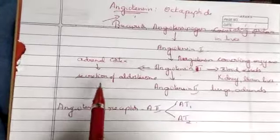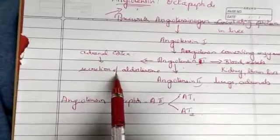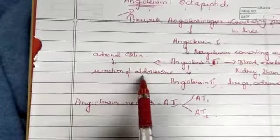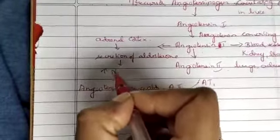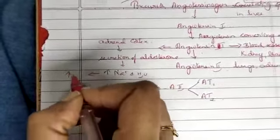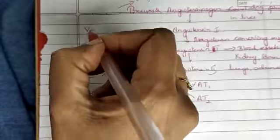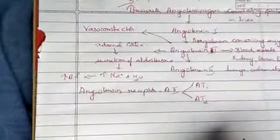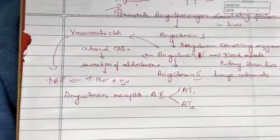Angiotensin 2 itself is a vasoconstrictor — when it constricts the blood vessels, it tends to increase blood pressure. On the other hand, it causes secretion of aldosterone from the adrenal cortex, and this secretion of aldosterone is in turn responsible for sodium and water retention, which in turn increases blood pressure. Additionally, angiotensin 2 acts as a vasoconstrictor, and this vasoconstriction is responsible for further increasing blood pressure.